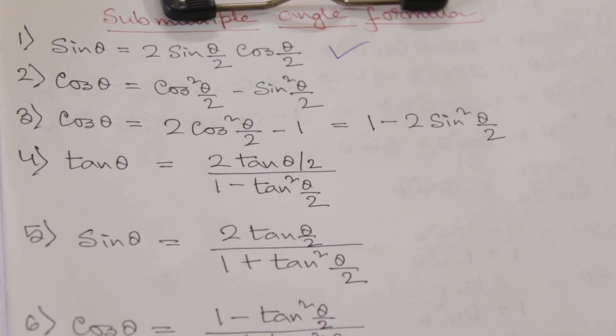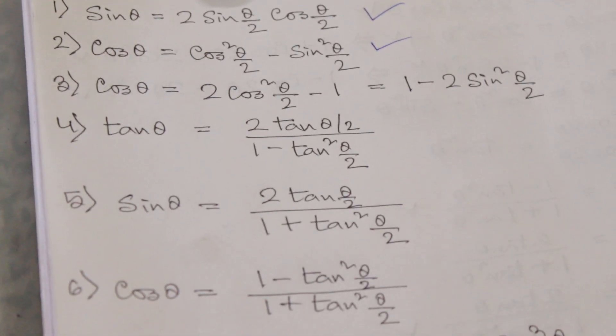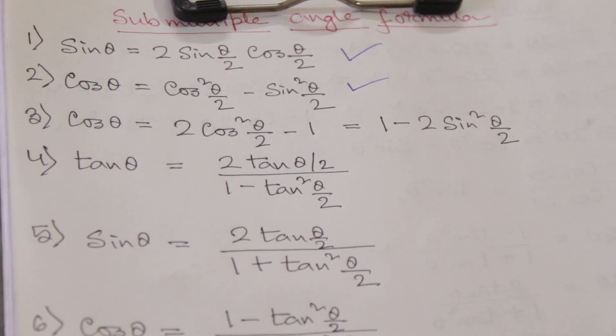There are some more formulas of cos θ like cos θ equal to 2 cos² θ/2 minus 1, and which is also equal to 1 minus 2 sin² θ/2.